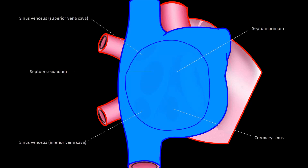As said before, the atrial septal defects occur because of disturbances produced during cardiac septation. In this way, it will be interesting to take a look at the process of formation of the interatrial septum.